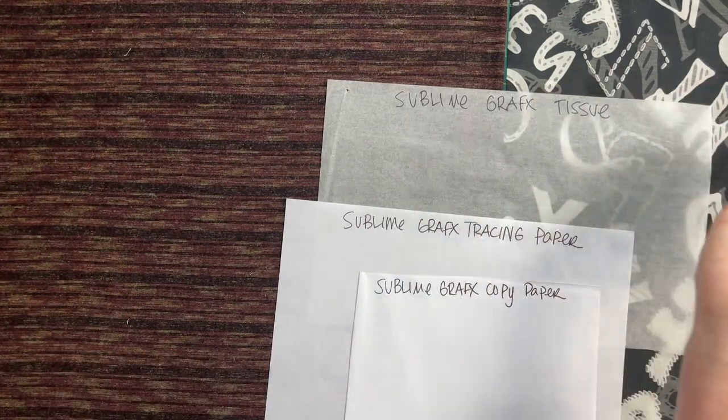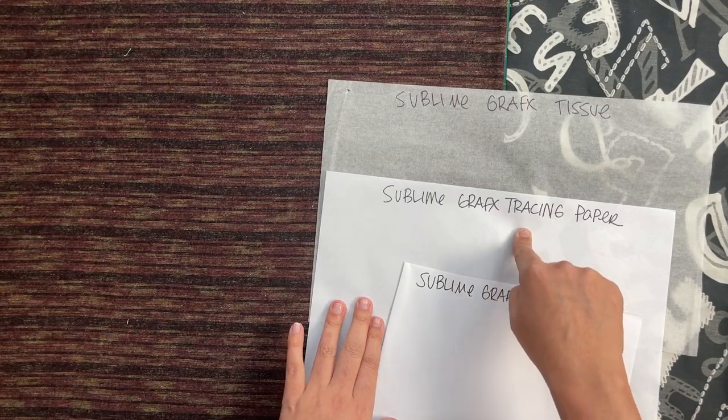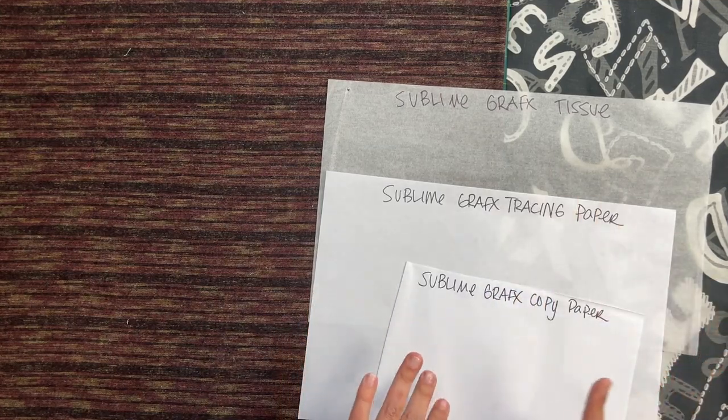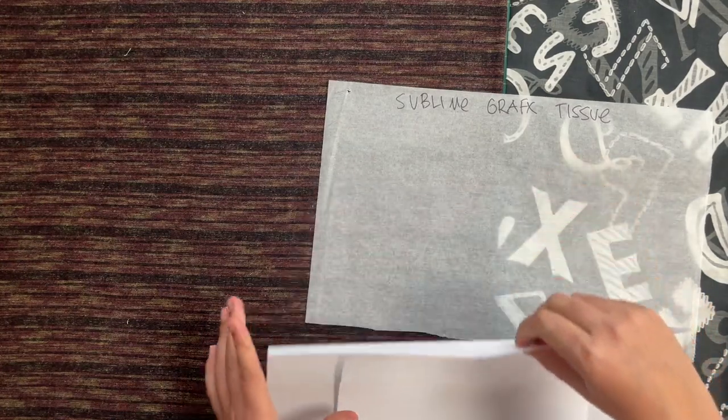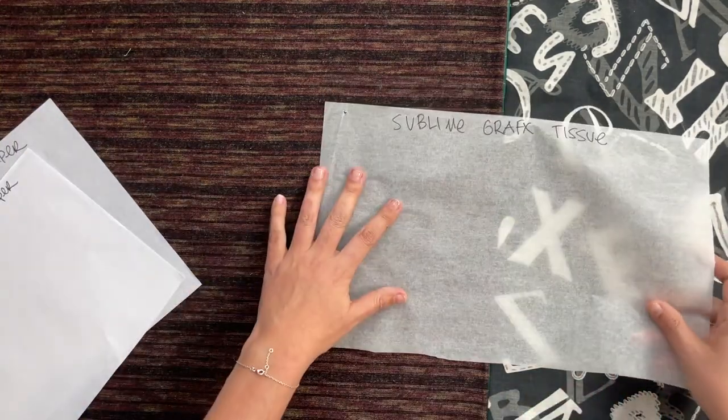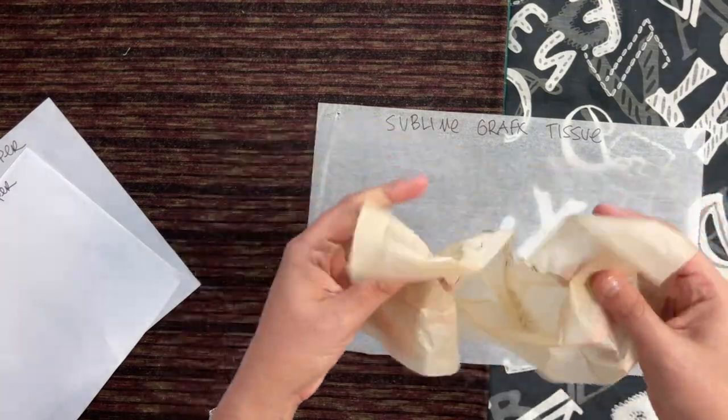You might think that you always want to get tissue paper, but that's not always the case. I sometimes prefer the tracing paper and I don't think I've ever ordered the copy paper, if I'm being perfectly honest. So first up, we've got the tissue. Now, how does this compare to big four tissue? Big four tissue is literally tissue.